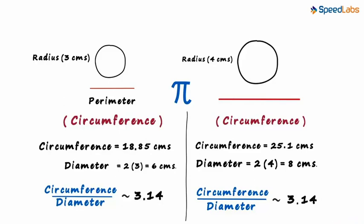No matter what circle you look at, the value of circumference by diameter will always be approximately equal to 3.14. This value is pi. Remember, both these values are approximations.